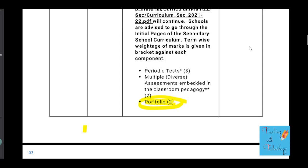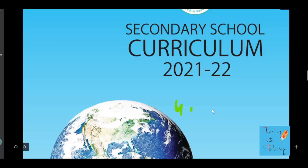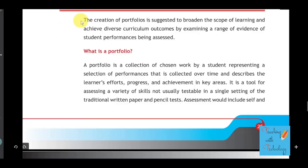In this video I will be giving some suggestive ideas on how students can work smartly and prepare their digital portfolio. But before starting, let's understand from CBSE's point of view what they want to achieve. Section 4.3.2 of the Secondary School Curriculum 2021-22 explains that the criterion of portfolios is suggested to broaden the scope of learning and achieve diverse curriculum outcomes by examining a range of evidence of student performance.